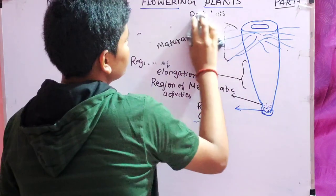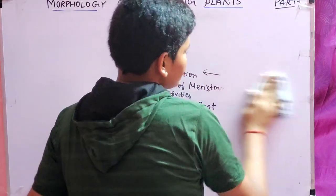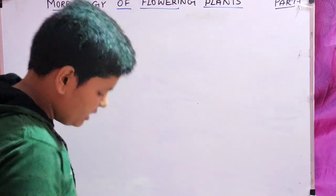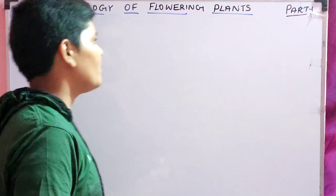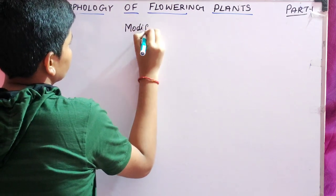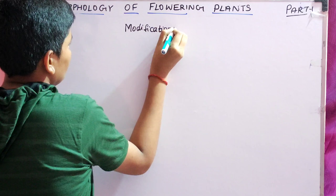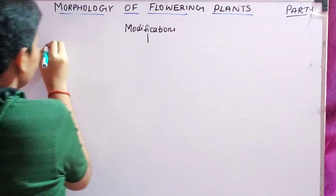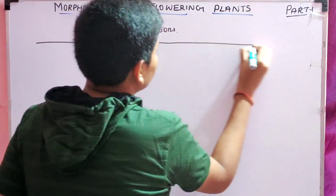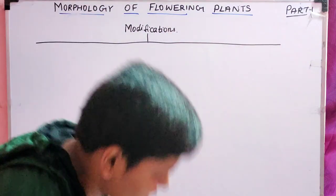So these are the regions of the root: the root cap, region of meristematic activity, region of elongation, region of maturation, and root hairs. Now we are going to the main part — modifications of roots.